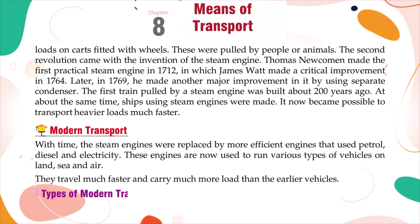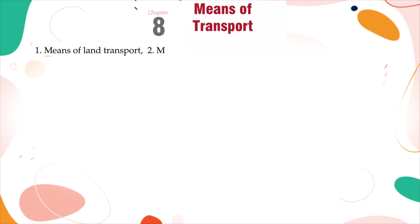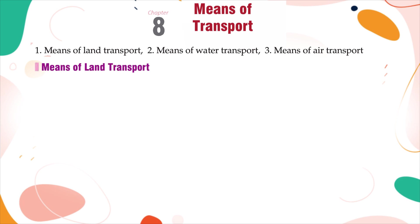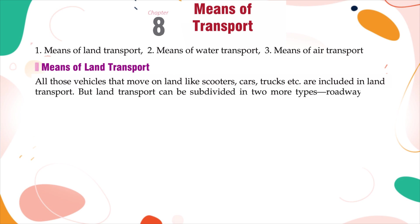Types of Modern Transport: The means of transport can be broadly divided into three types — Means of Land Transport, Means of Water Transport, and Means of Air Transport. All vehicles that move on land, like scooters, cars, trucks, etc., are included in land transport. Land transport can be further subdivided into two types: Roadways and Railways.